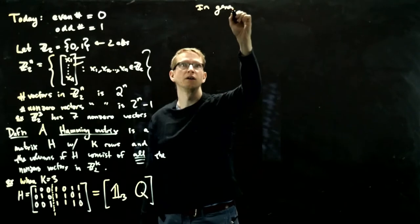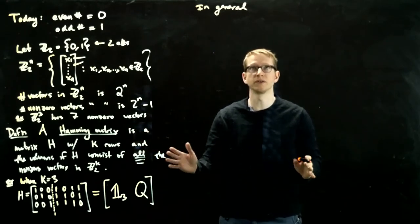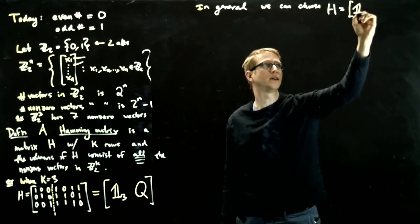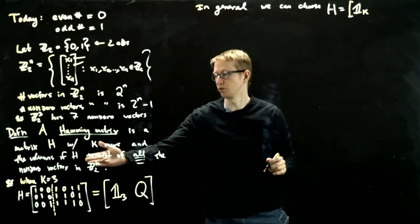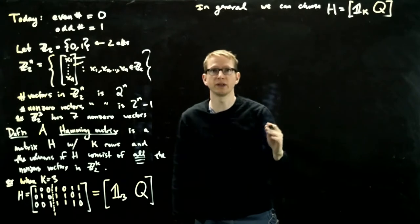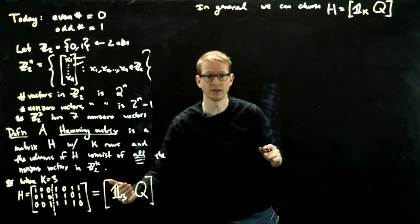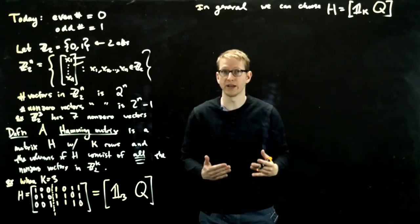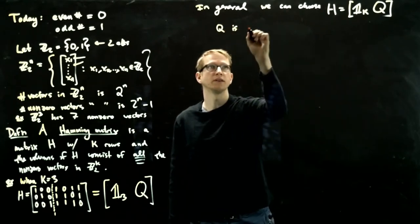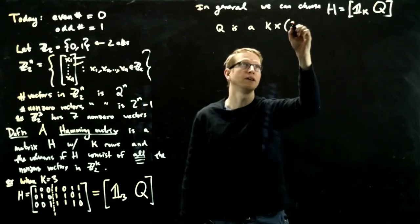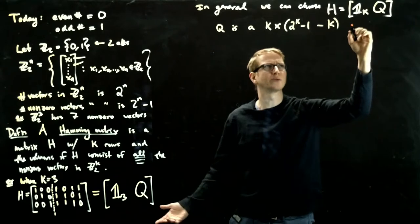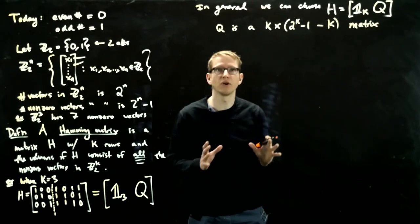And in general, if k was arbitrary, we can also do something very similar. We can choose to have a matrix H of the identity with a k by k here. So because we're working with vectors of length k, this is going to be the identity k matrix. And then another matrix Q here. We know how many rows the matrix Q has, but how many columns does it have? We need to list all of the non-zero entries. And we know the number of non-zero entries is 2 to the k minus 1, and we've already used k of them. So Q is a k times 2 to the k minus 1 minus k matrix, consisting of all the other non-zero vectors.